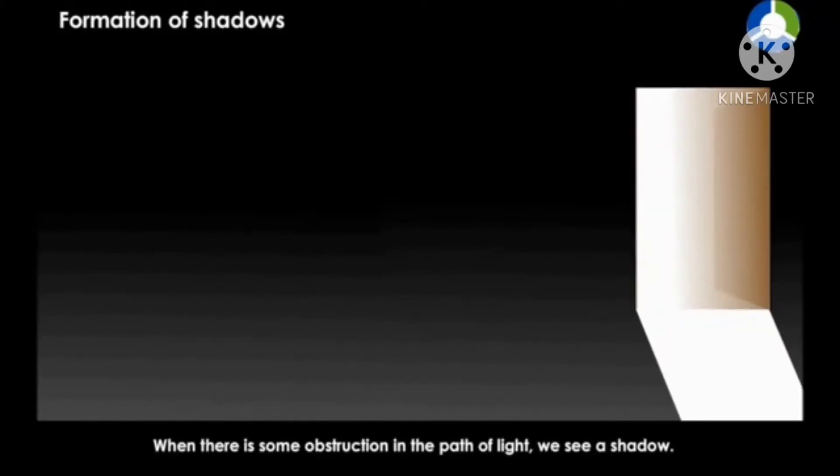Formation of shadows. When there is some obstruction in the path of light, we see a shadow.